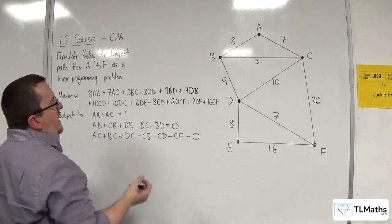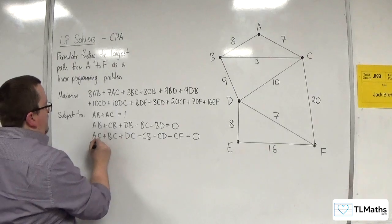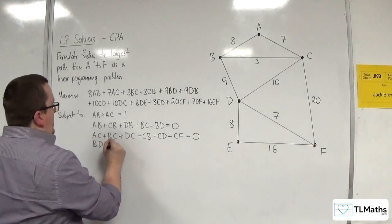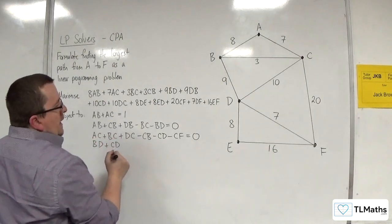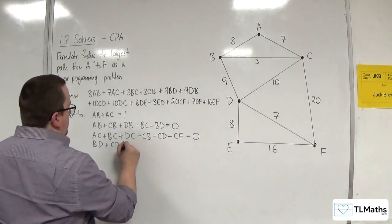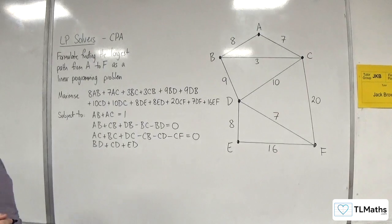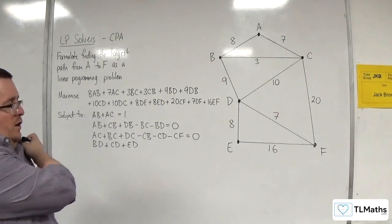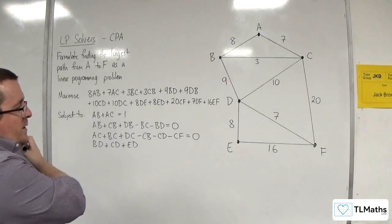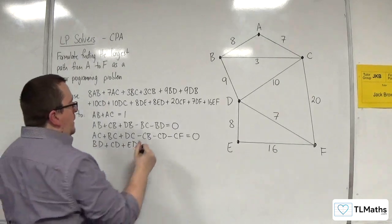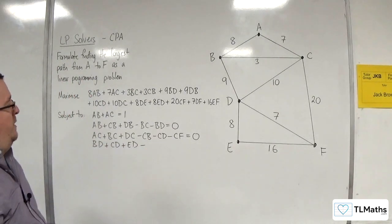Then you've got vertex D, so all the routes in are BD, CD, not FD, ED as possible, although you wouldn't be going along ED, but I'm going to include it anyway for reasons that I've spoke about in previous video.